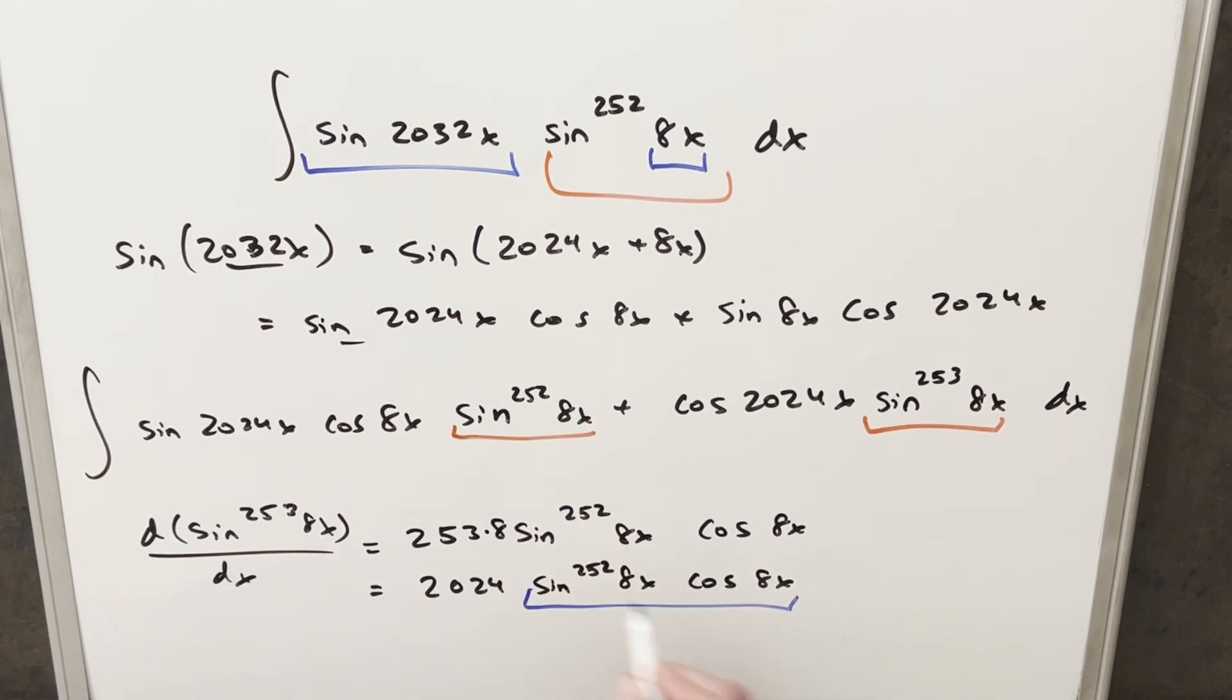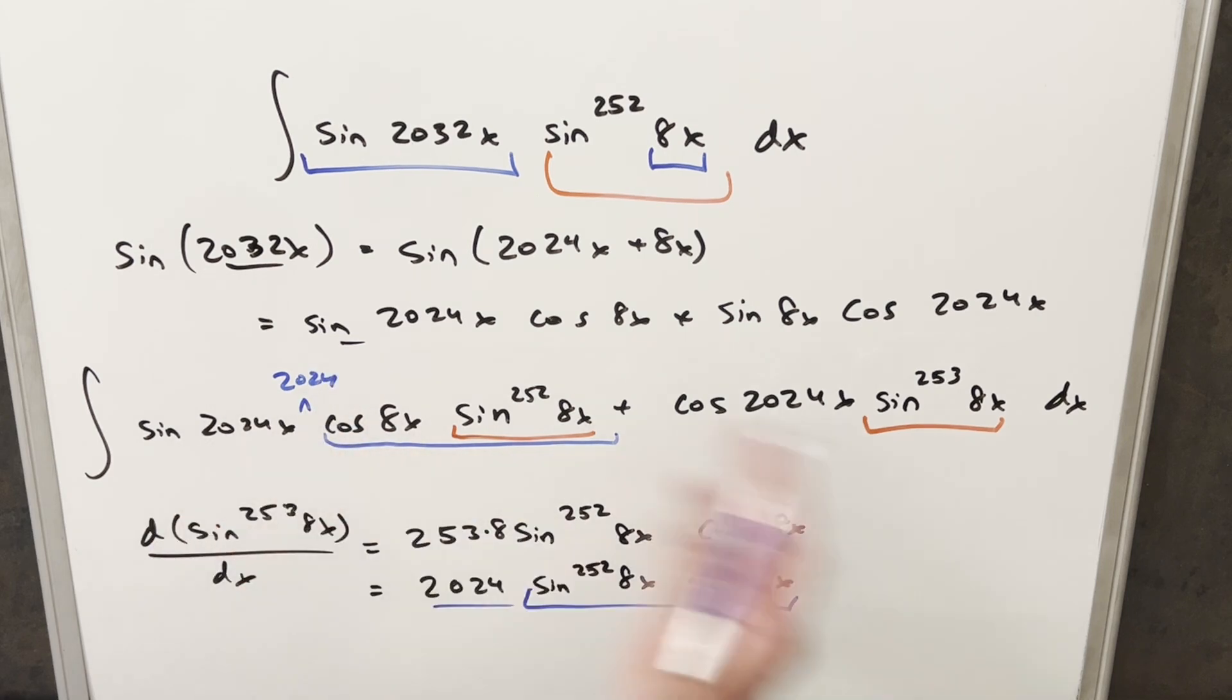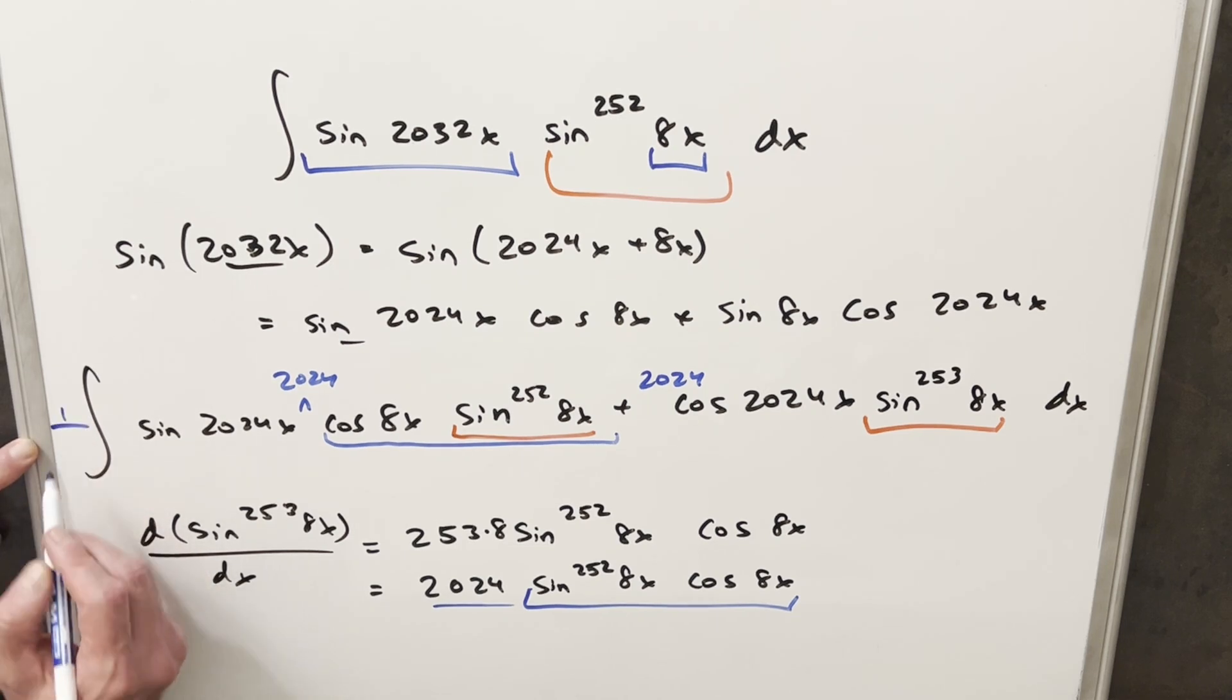And then we'll have all this other stuff. But now what we have right here, we already have this in this other part of the expression. We have this right here. We don't have the 2024, but I can create that. What I'll do is I'll multiply in 2024 here, but I need to multiply it through the whole thing. So I'll multiply 2024 here, and I need to divide by it here, but I'm a little bit out of space. So let me squeeze that in.